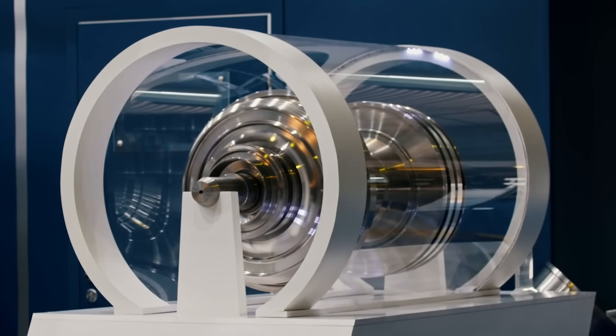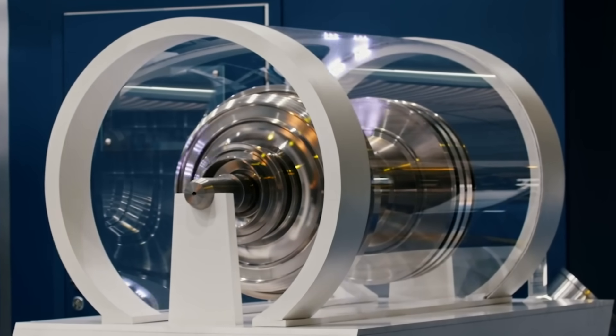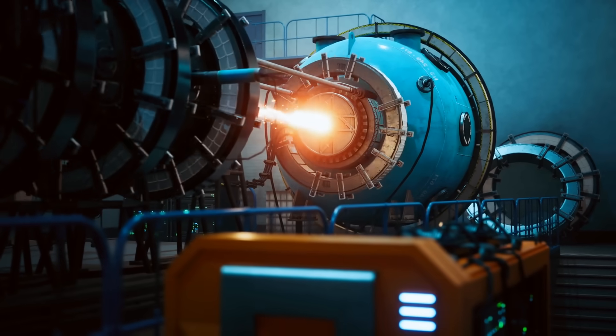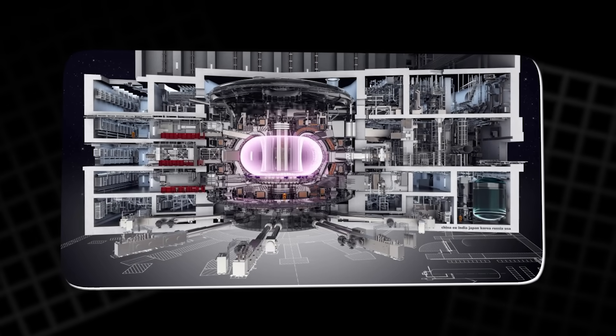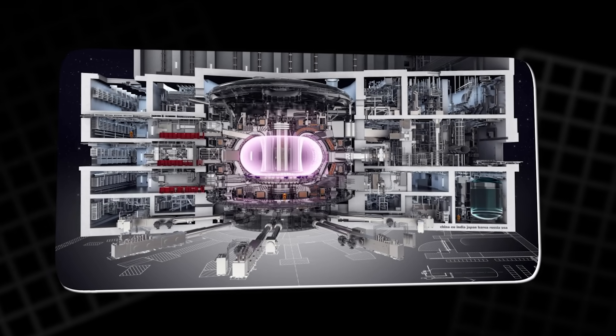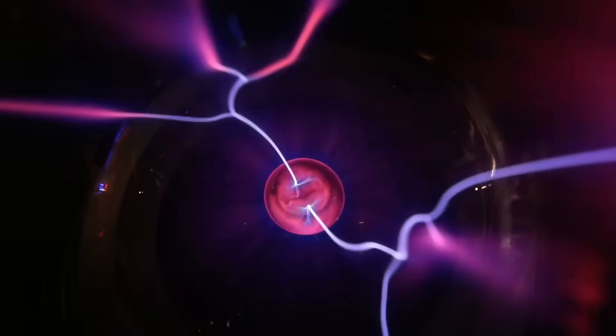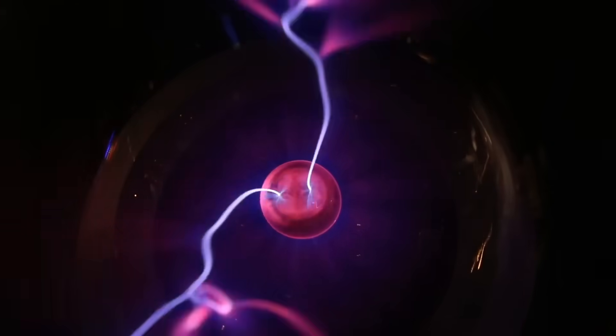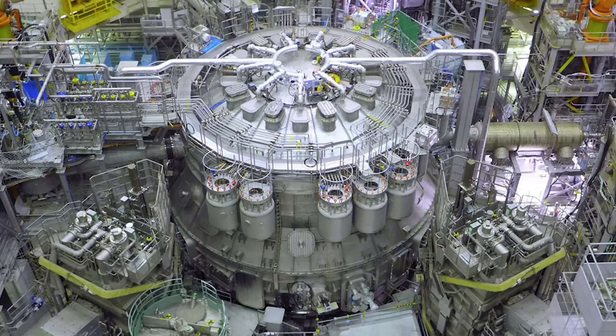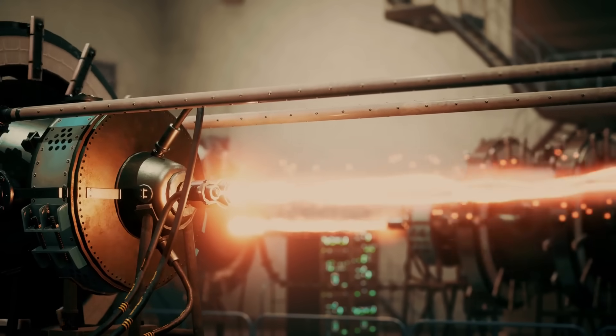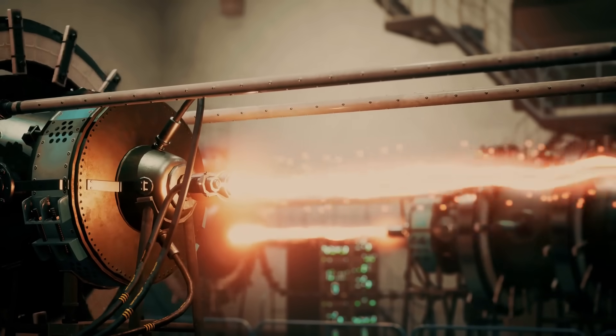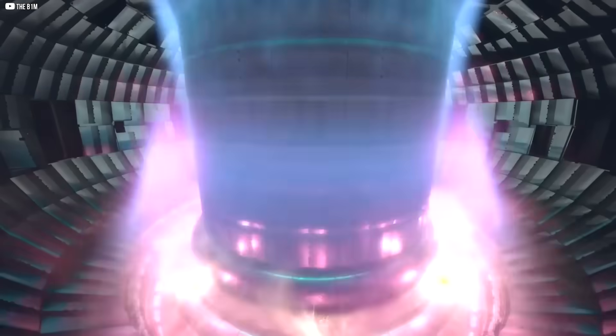Superconducting magnets create an invisible magnetic cage that holds the plasma safely, keeping it from touching the reactor walls. The ITER reactor in France is building the largest superconducting magnets ever made. These massive magnets are designed to control the plasma precisely so fusion reactions can happen steadily.